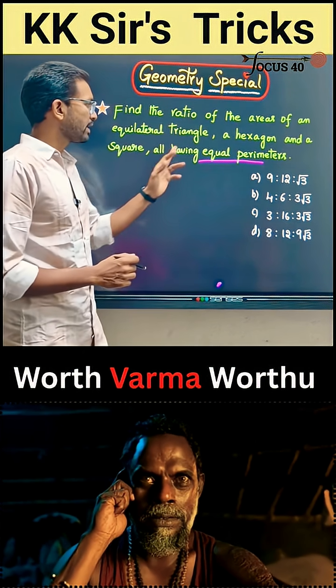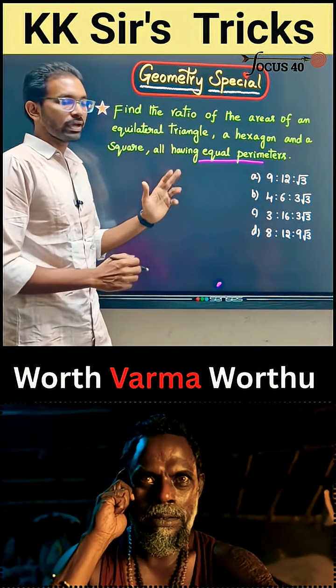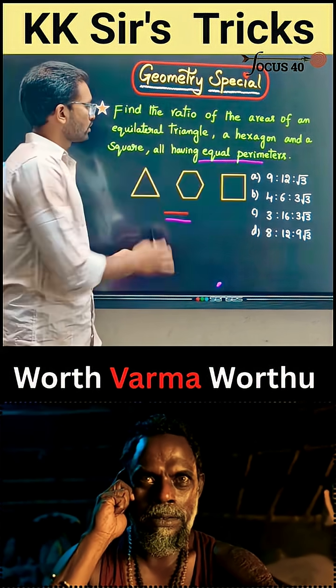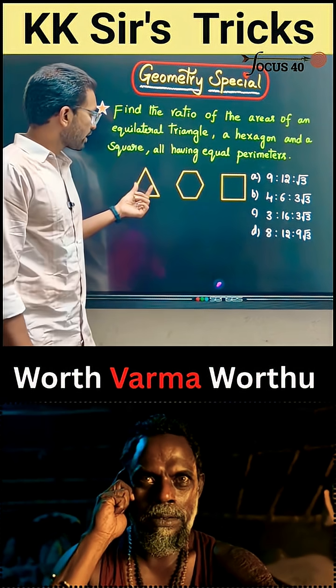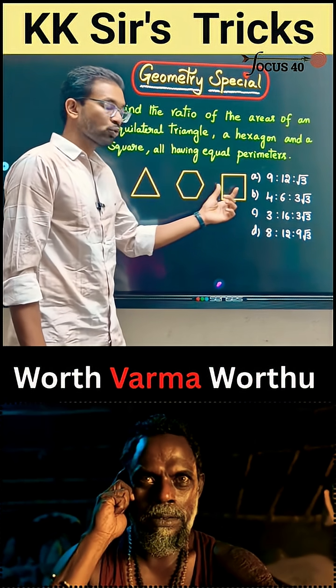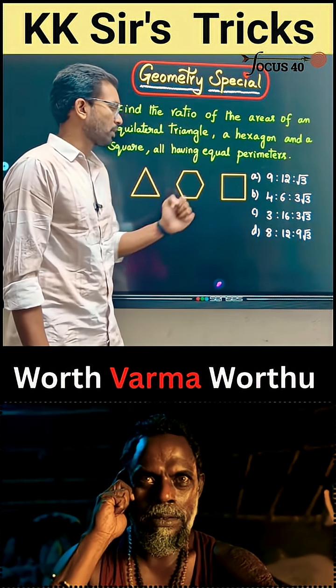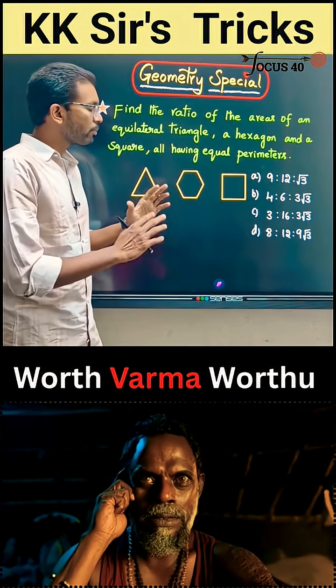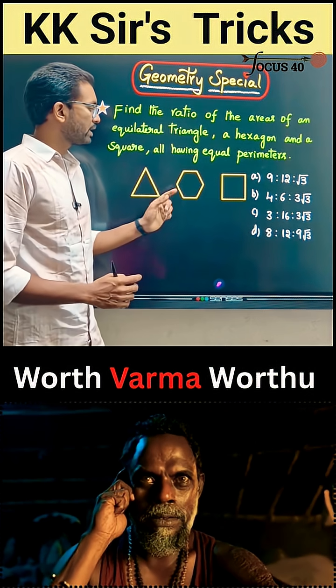The three figures are: triangle, hexagon, and square. An equilateral triangle has 3 sides, a hexagon has 6 sides, and a square has 4 sides. All three figures have equal perimeters.